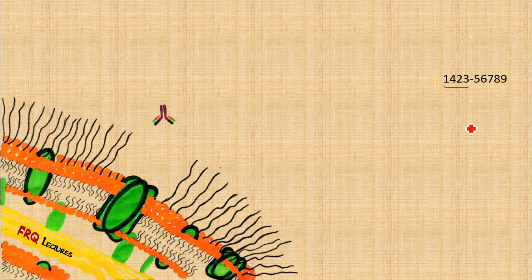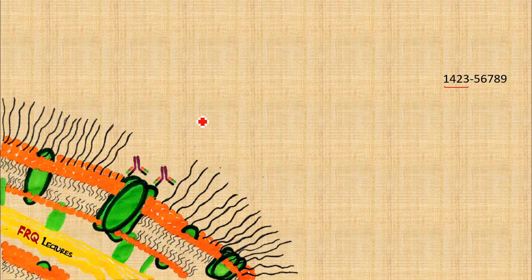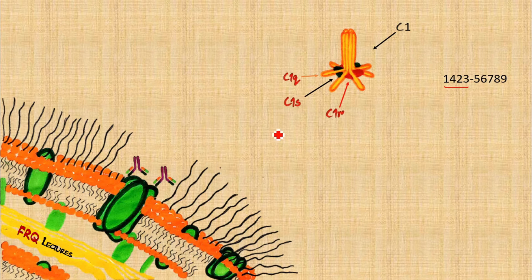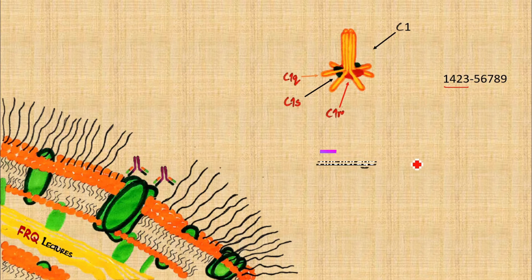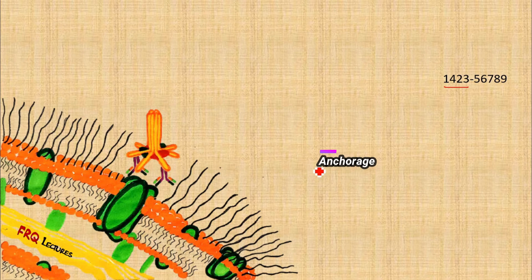First, antibodies move and attach themselves to the surface of the target bacteria. Several antibodies accumulate on the bacterial pathogen's surface, and then C1 arrives. C1 is subdivided into three subunits: C1q, C1r, and C1s, which work in alphabetical order. C1q — the longer yellow structures — performs its role first, and C1r and C1s are smaller structures attached to those rods. C1q is responsible for anchoring the whole C1 molecule to the antibodies.